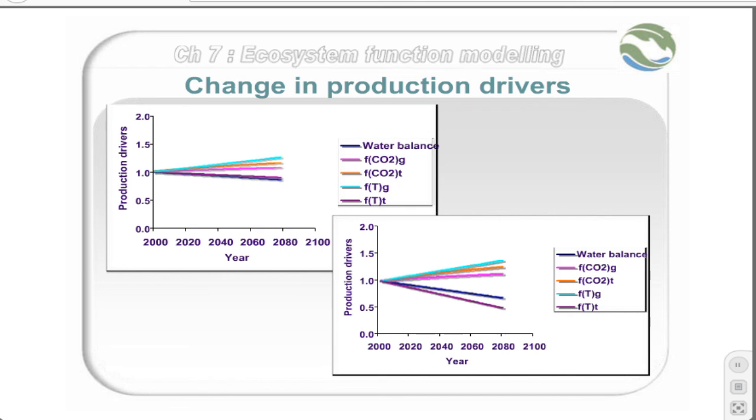To understand the climate change outputs, it is important to remember the factors that drive change in tree and grass production: water balance, controlled by both rainfall and temperature, carbon dioxide, and temperature. The water balance and temperature factors drive production down in the future in this case, whilst carbon dioxide drives it up. It differs for trees and grass, but note that the climate factors overwhelm the CO2 effect.